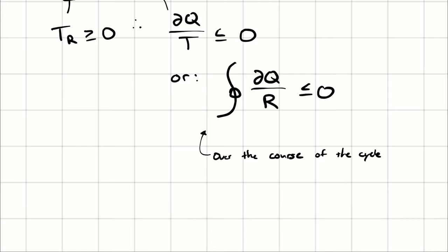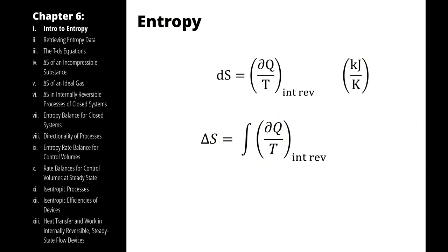So for any actual sequence of processes, the cyclic integral of δQ/T must be less than or equal to zero. So delta S equals the integral of δQ/T for an internally reversible process, and that equals sign is now an inequality for everything else.